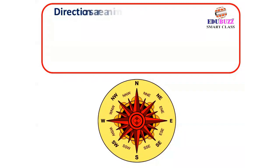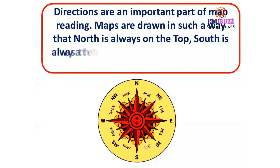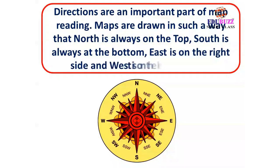Directions are an important part of map reading. Maps are drawn in such a way that north is always on the top, south is always at the bottom, east is on the right side and west is on the left side.